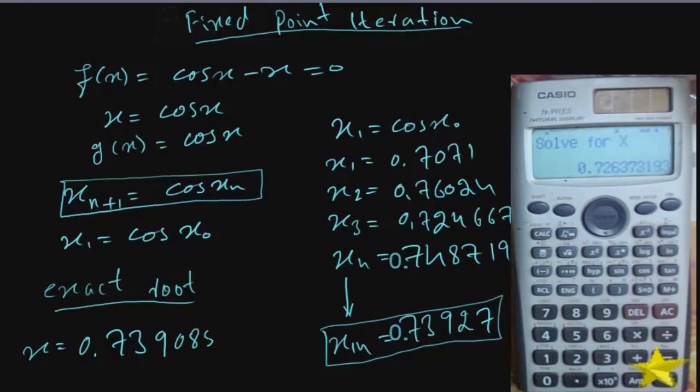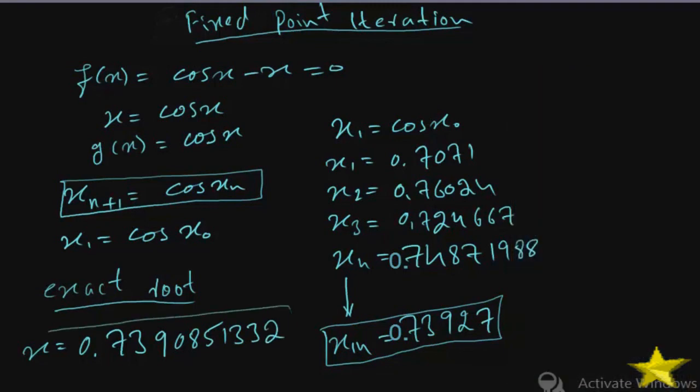Press shift key and then calc, which means to solve, and enter any value that is close to your actual root. Suppose 0.5. It will give me the root which is most close to 0.5, and the most close root to 0.5 is 0.739085. I hope you have enjoyed that. Thanks for watching.